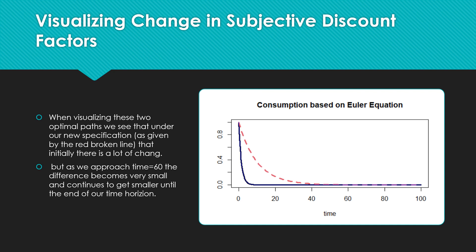When visualizing these two optimal paths, we see that under our new specification, as given by this red broken line, that initially there's a lot of change. Because under this new specification, we see much more consideration for consumption in the next period, consuming more beyond into these next periods. But as we approach, say, time equal to 60, and some could say that at time equal to 45 it starts getting there, but at 60, the difference between these two paths gets smaller and smaller until the end of our horizon.